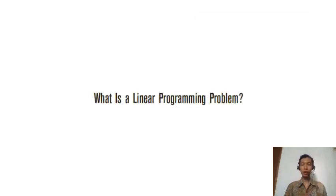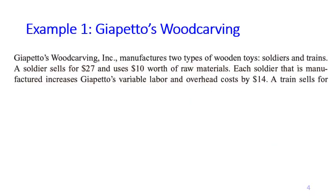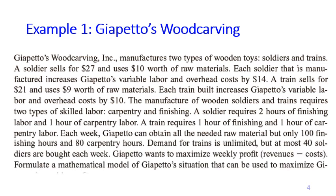From the previous page, you see that our first task is to translate or formulate a real world problem into a linear programming problem. Using the next example, we are going to see what a linear programming problem looks like. In this example, we're going to talk about Giapeto's wood carving, which manufactures two types of wooden toys called soldiers and trains. Giapeto wants to maximize the weekly profit.